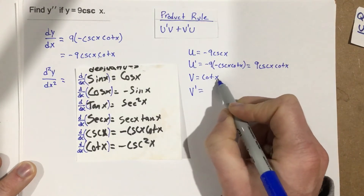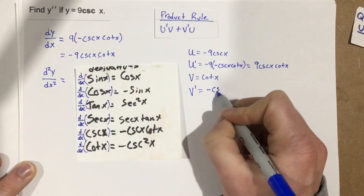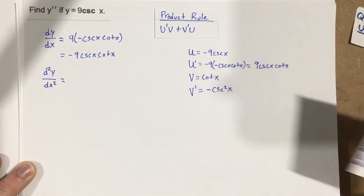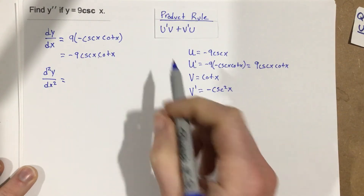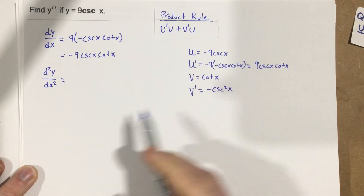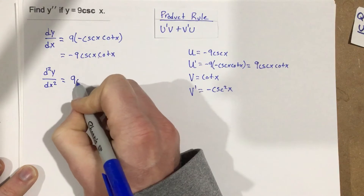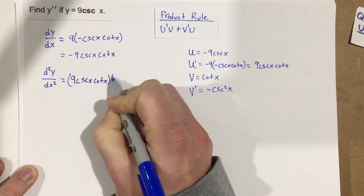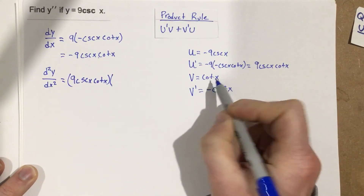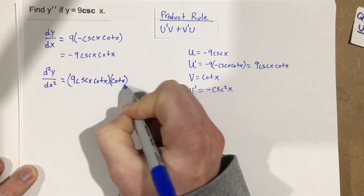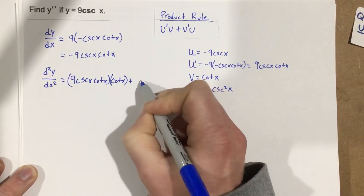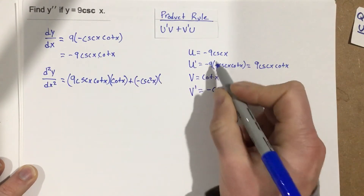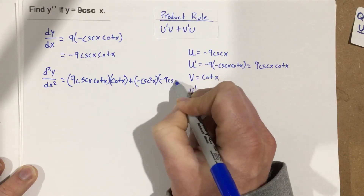The derivative of cotangent x is negative cosecant squared x. Now that I've found u prime and v prime, I can use the product rule. So u prime times v: u prime is 9 cosecant x cotangent x, times v which is cotangent x, plus v prime which is negative cosecant squared x, times u which is negative 9 cosecant x.